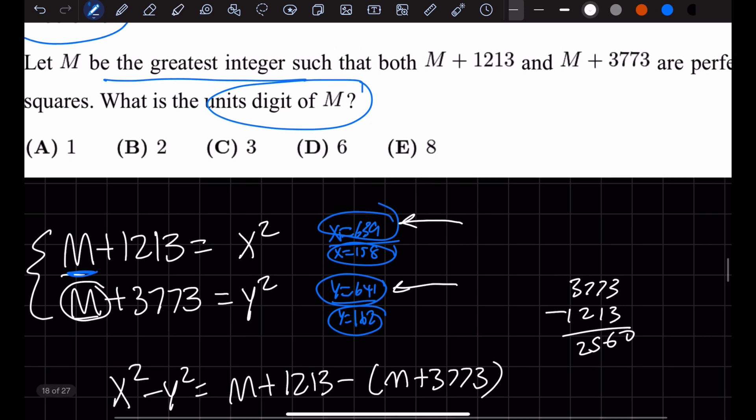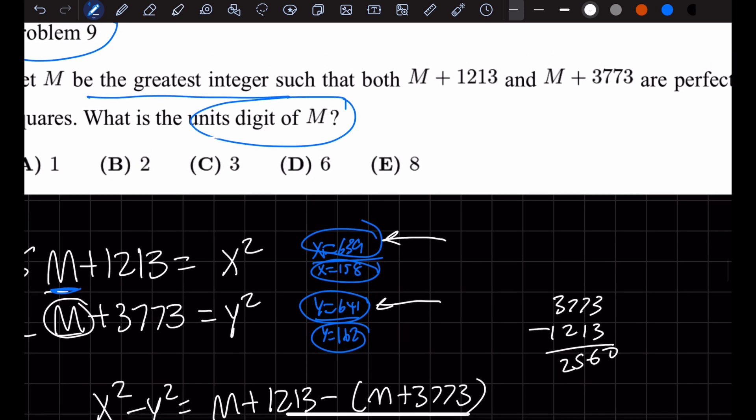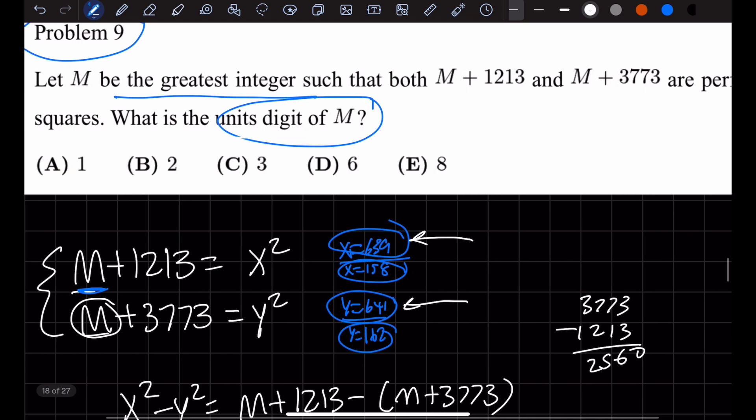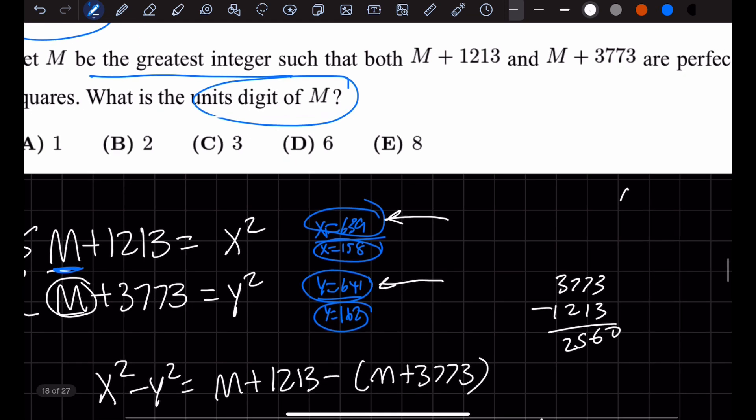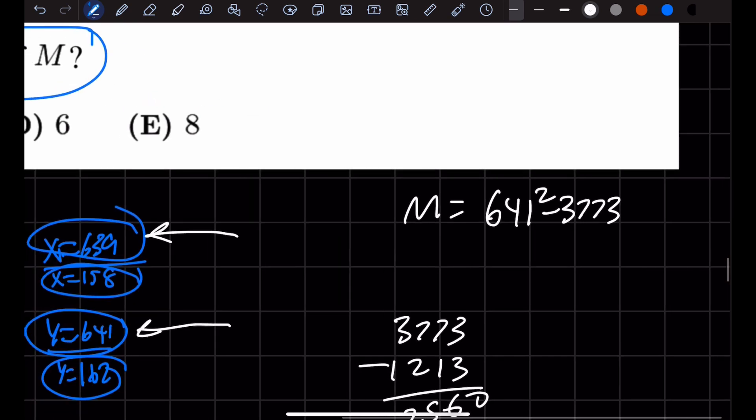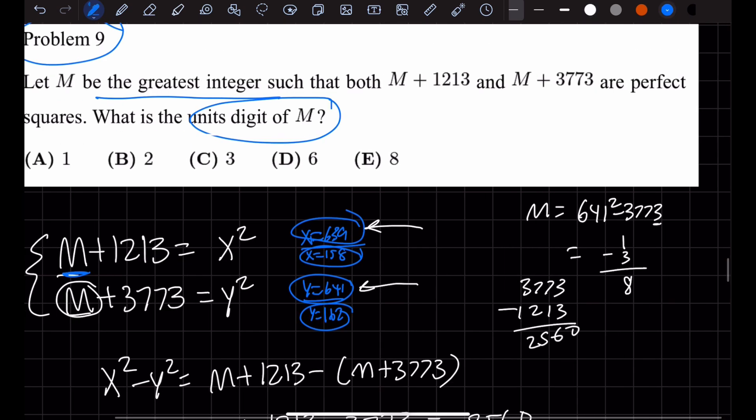Now let's figure out what M is to find the units digit. Since we only care about the units digit, we don't need the full calculation. So 641 squared minus 3,773 equals M. The units digit will be 1 squared, which is 1, subtracted by 3, which gives us something ending in 8. So answer choice E.